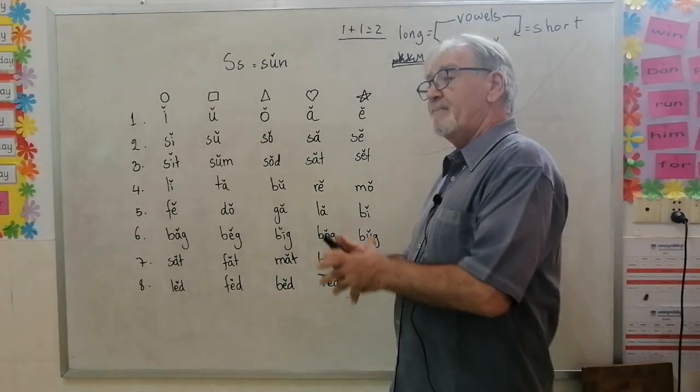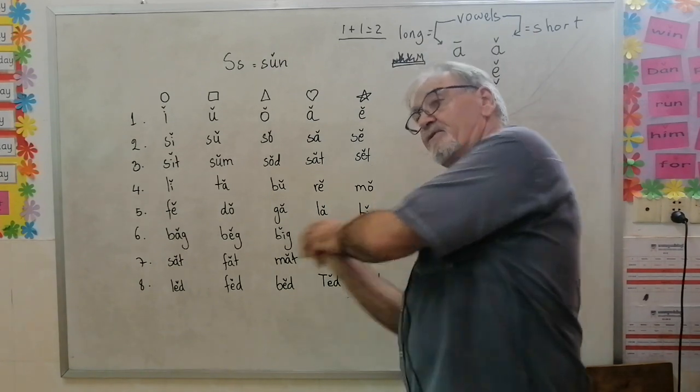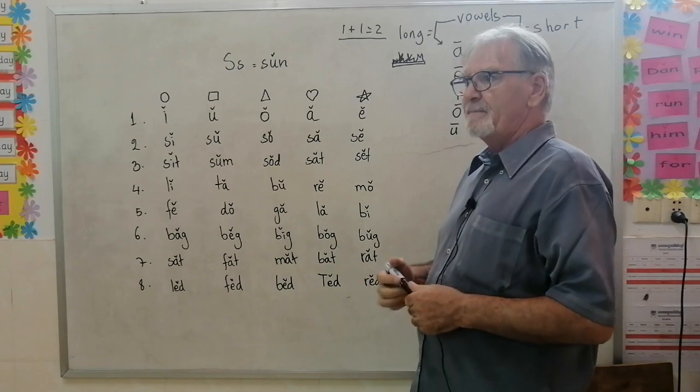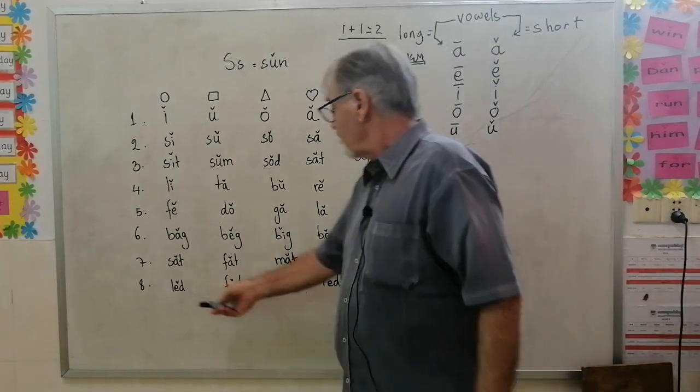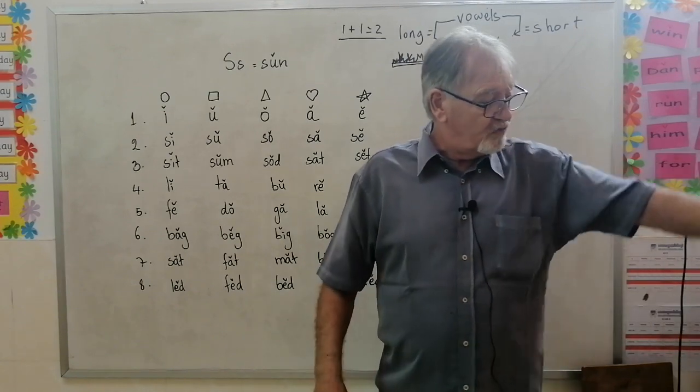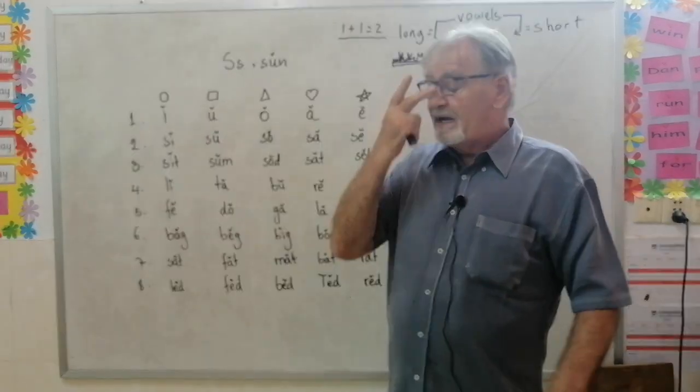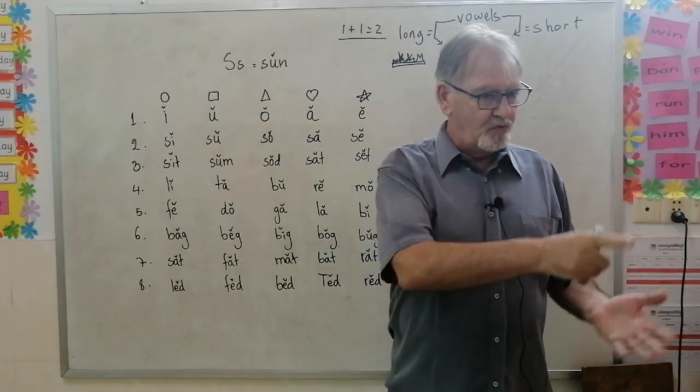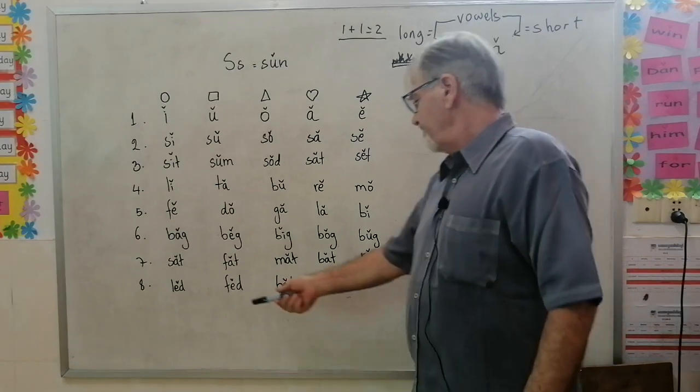Bat is a piece of stick that you can hit the ball with. Rat is a big mouse with big teeth, not clean. Lead means that if all of you join in a line and I take you for a walk, that means I have led you around the walk.